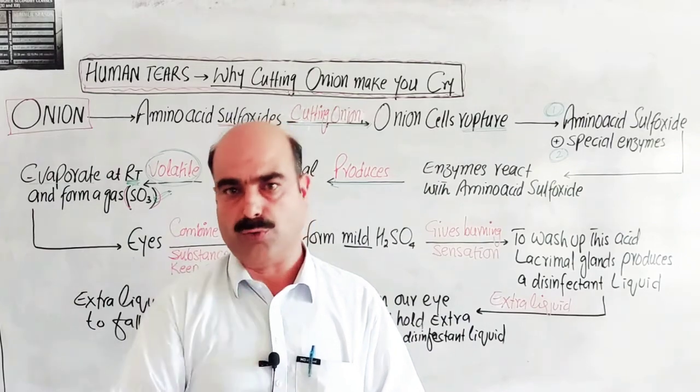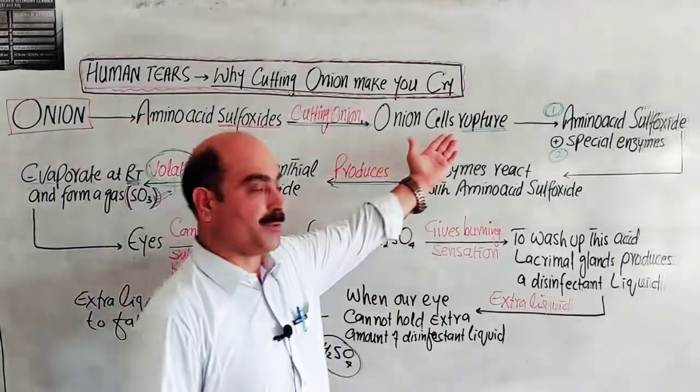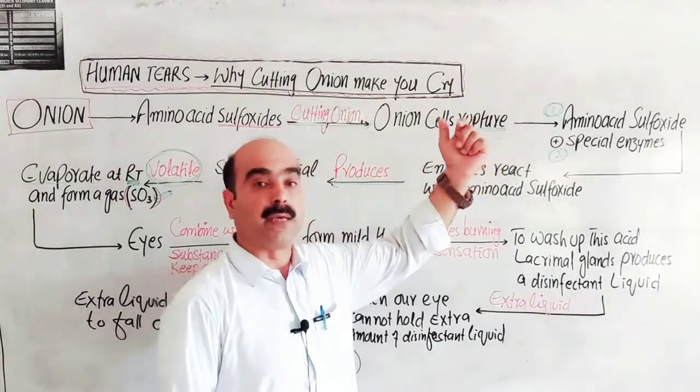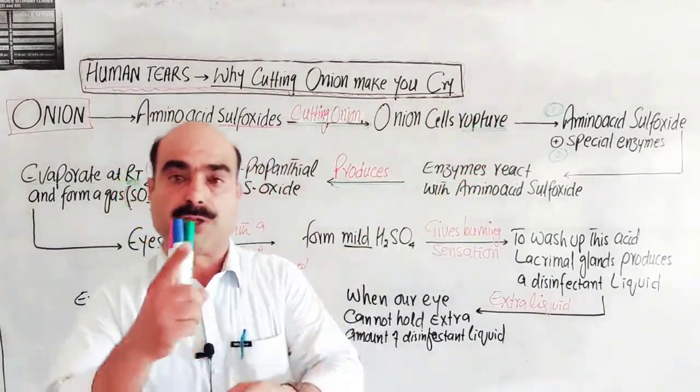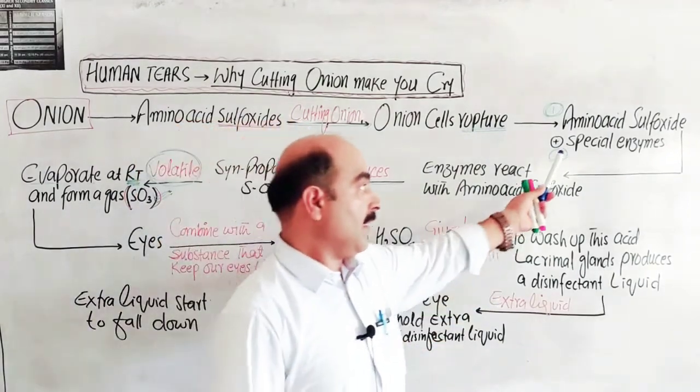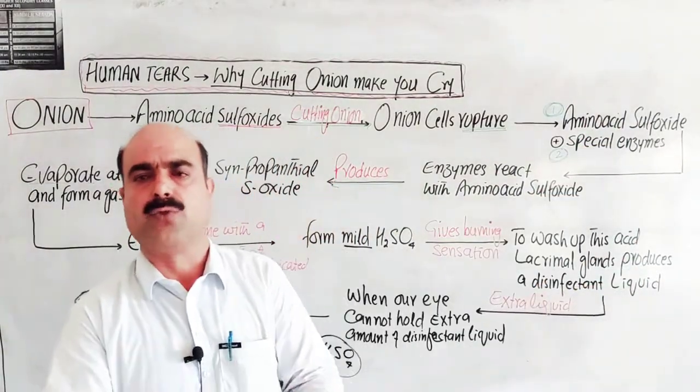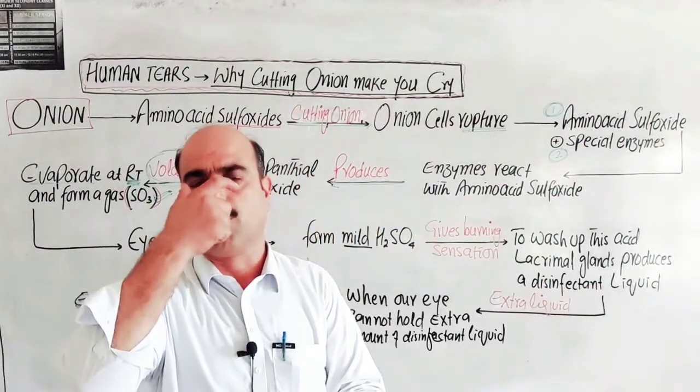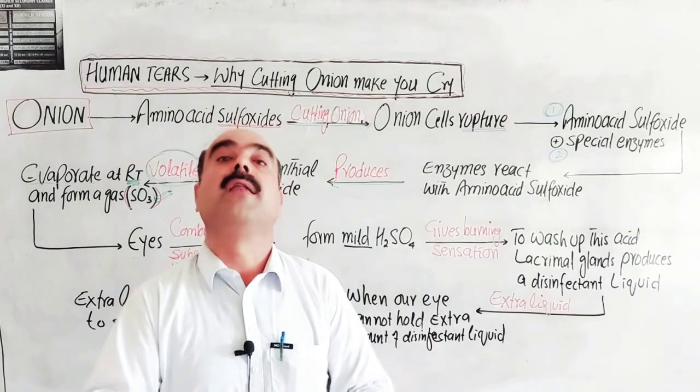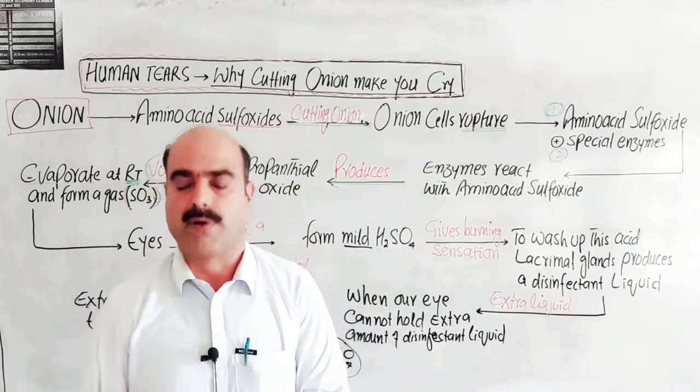If you use a sharp knife, fewer cells will rupture. When millions of cells rupture, more enzymes and amino acid sulfoxide will be created, more sulfur trioxide will form, more H2SO4 will be formed in the eyes, and more tears will be created. Use a sharp knife to minimize burning sensation. Thanks a lot for watching.